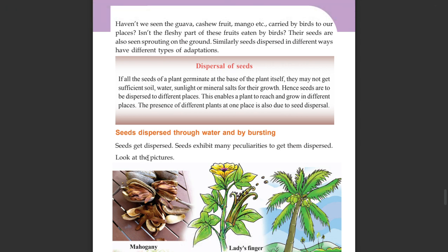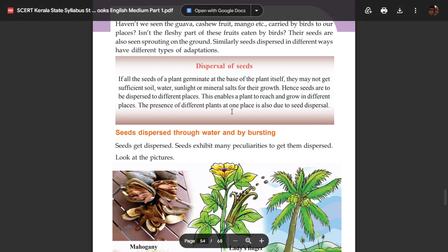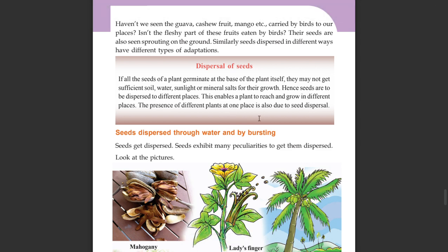If all the seeds of a plant germinate at the base of the plant itself, they may not get sufficient soil, water, sunlight, or mineral salts for their growth. Hence, seeds are to be dispersed to different places. This enables plants to grow in different places. The presence of different plants at one place is also due to seed dispersal.